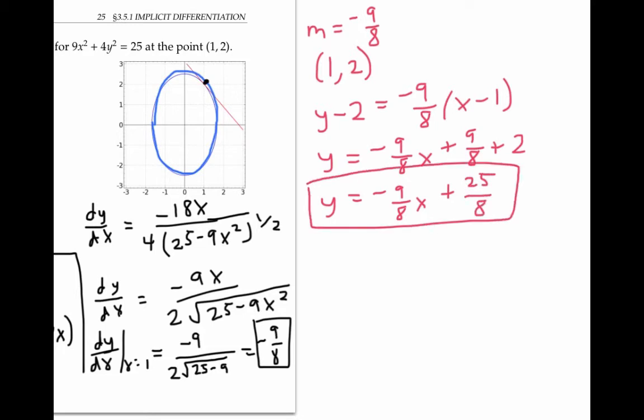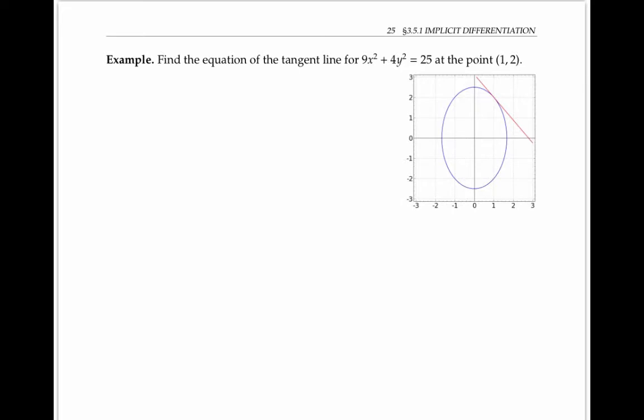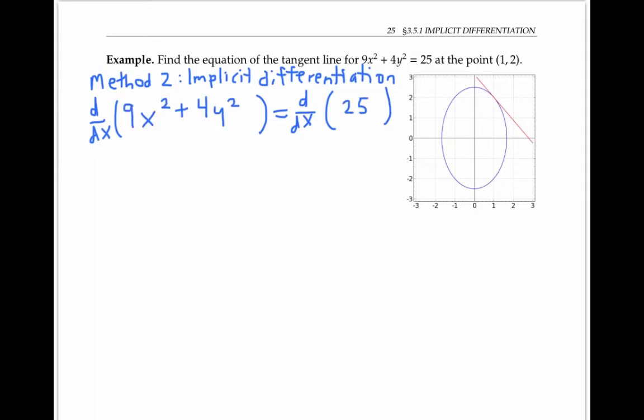Now that we've solved the problem once using a familiar method, let's go back to the beginning and solve it again using a new method. Method 2 is implicit differentiation. The idea is that I'm going to take the derivative with respect to x of both sides of my equation without having to solve for y.